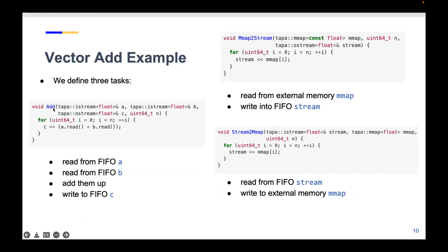We define three tasks. The first function, called 'add', takes four arguments: A, B, C are streams, and N is the vector length. It has a pipelined loop that reads an item from A, reads an item from B, adds them, and writes the result to C. The function 'memory_map_to_stream' reads from external memory for N items and writes them into a FIFO stream. Likewise, 'stream_to_memory_map' does the reverse—reads from an external stream and writes data to external memory.